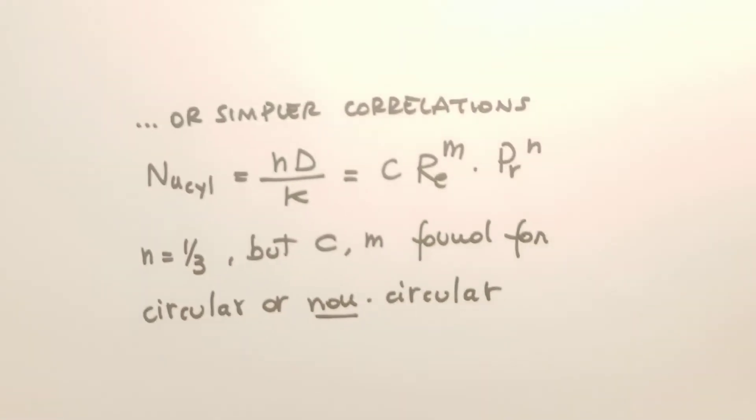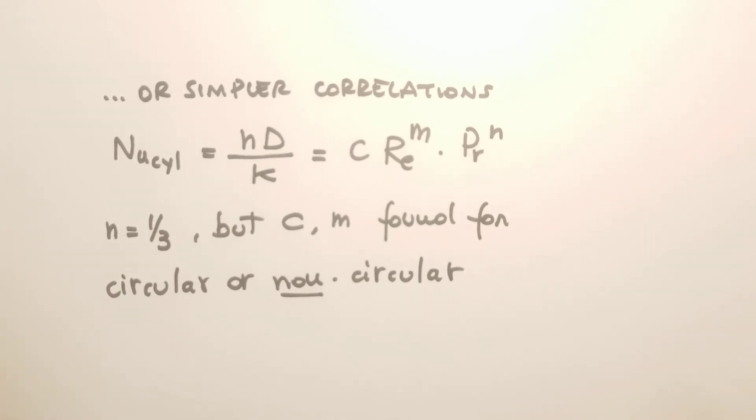You can also find simpler correlations that are of the algebraic form. So the Nusselt number for a cylinder, for example, can be expressed as a constant C times the Reynolds number to the M and Prandtl number to the N.